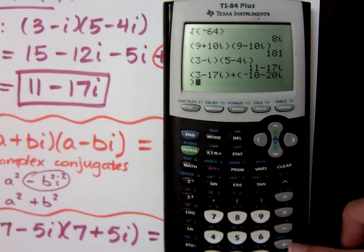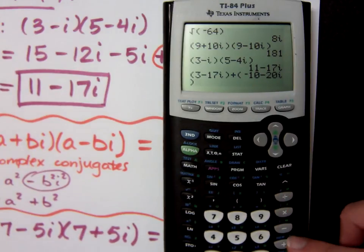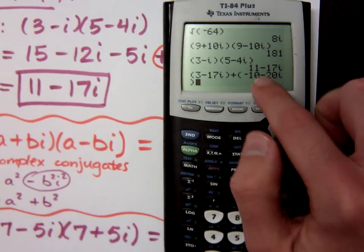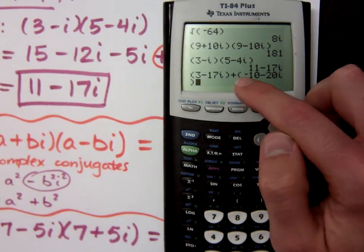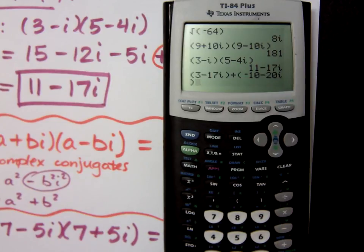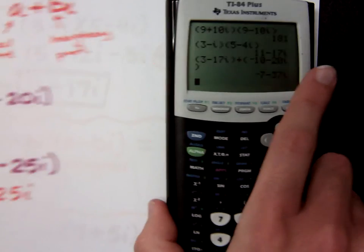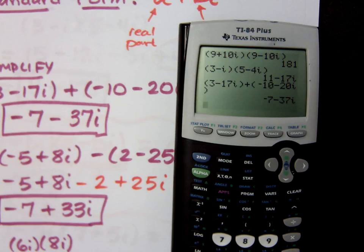If you use any of these symbols — add, subtract, multiply, divide — it requires a number both before and after that symbol. So if I put a minus sign here, it doesn't understand that. That's why I used the negative symbol, and that's why I get the answer I had before, which was negative 7 minus 37i.